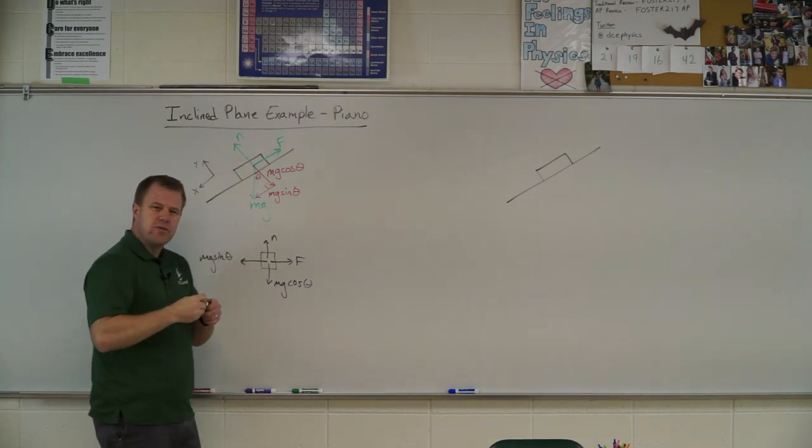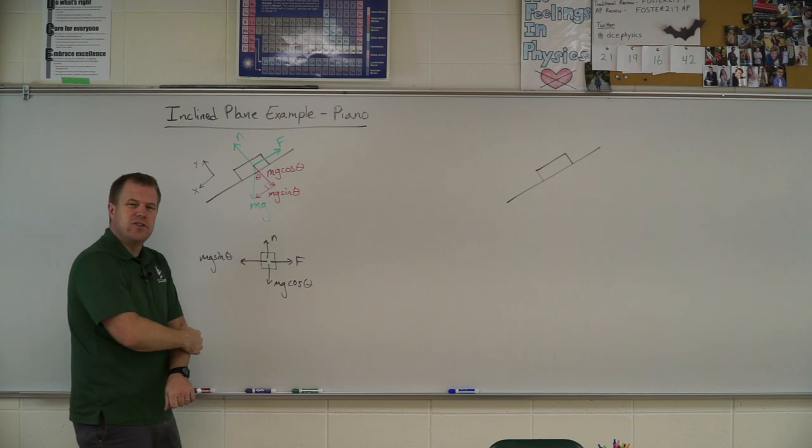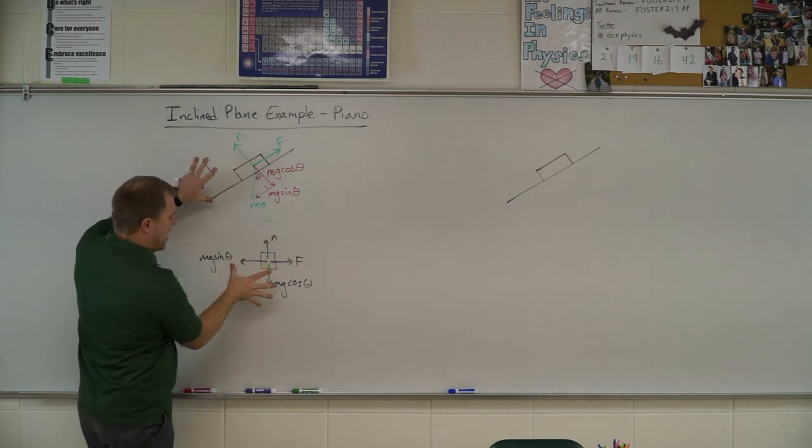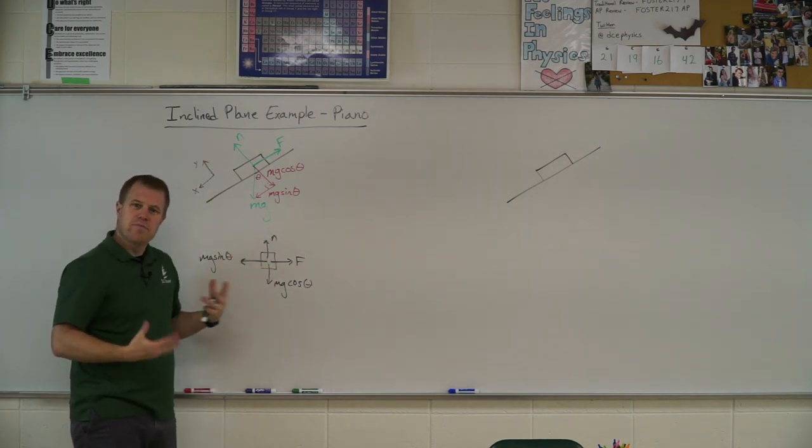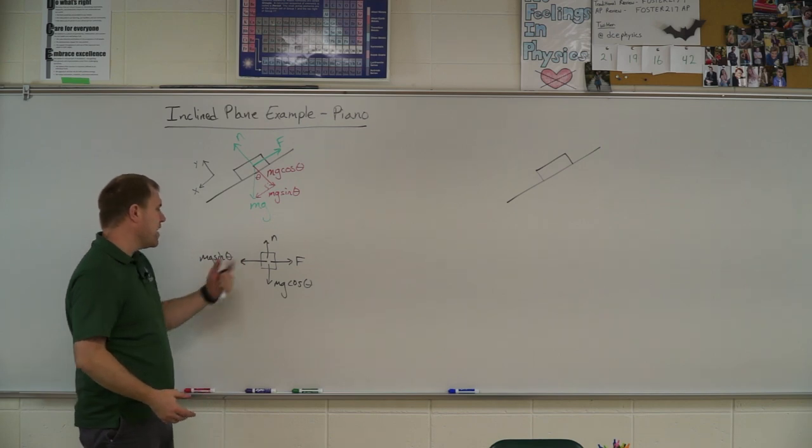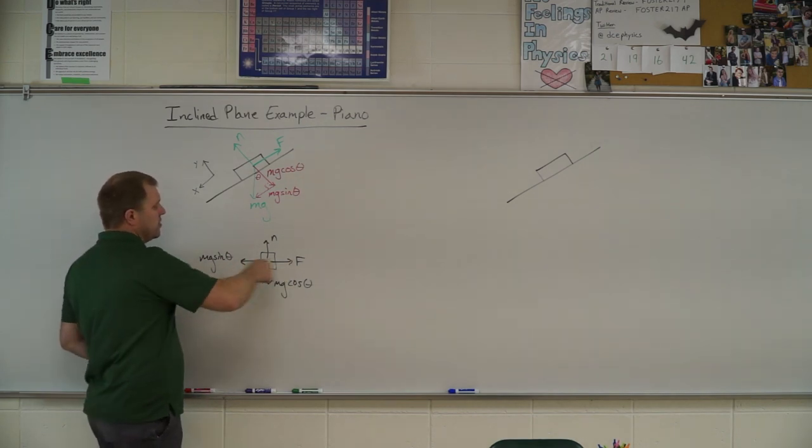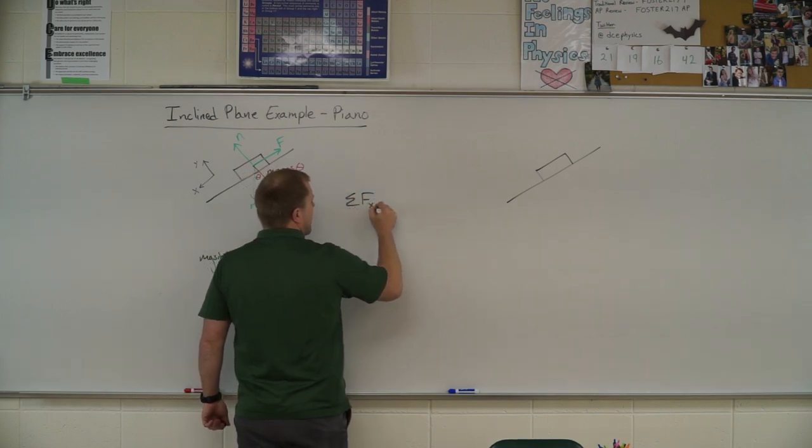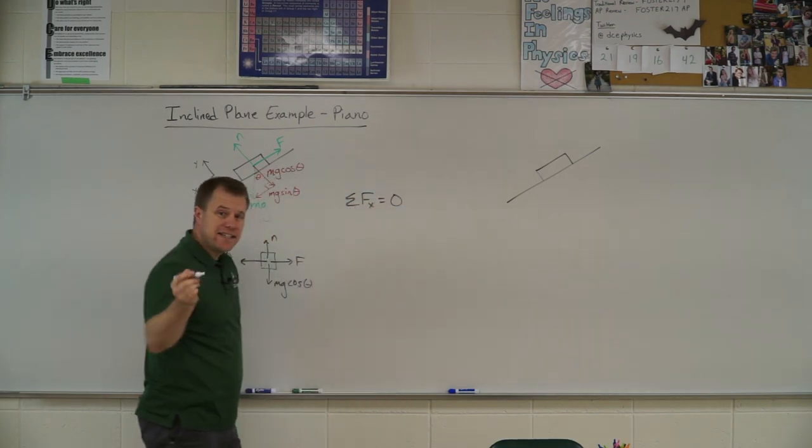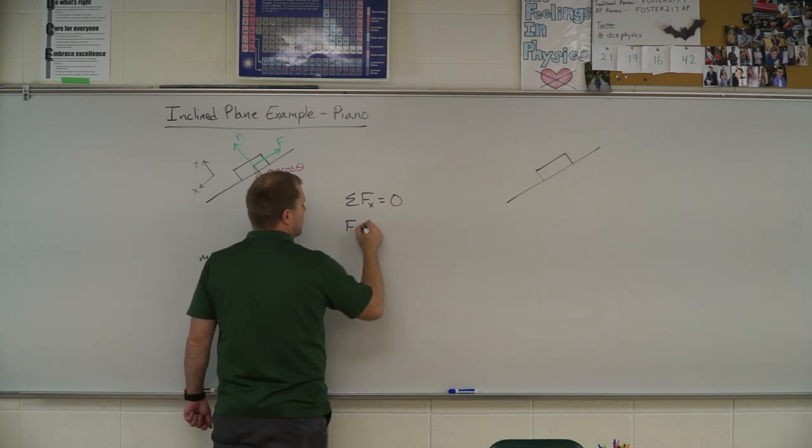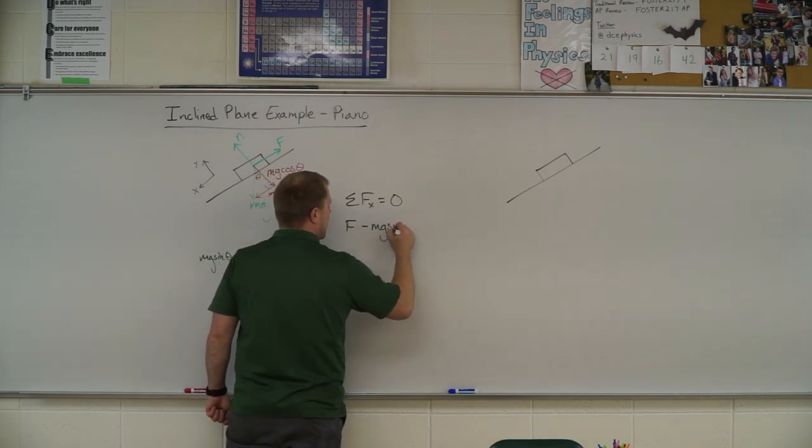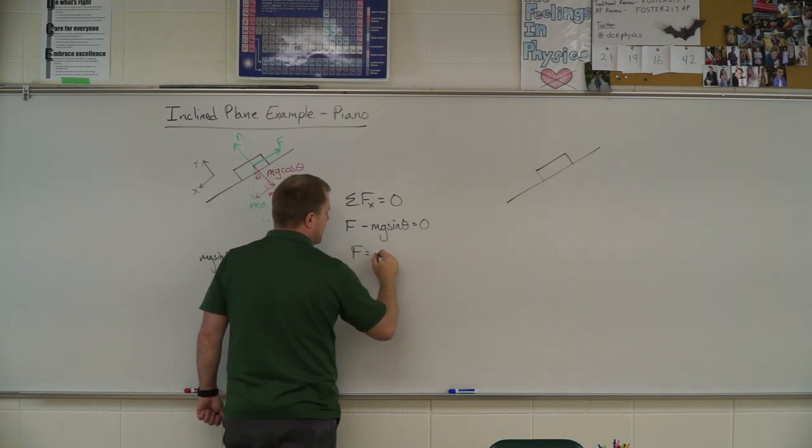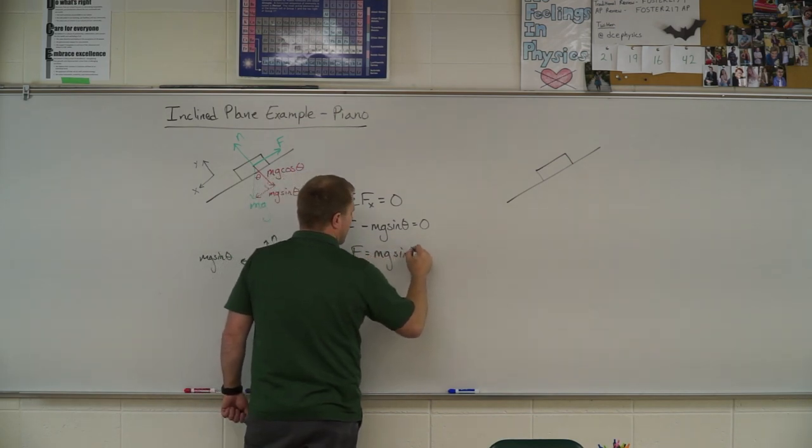So notice how when I redrew it, I kind of rotated it back to kind of orientate my xy axis with more familiar look. And so that's kind of nice. So what I need to look at is the x direction here. So I'm going to sum up the forces in the x direction. It's going to be zero because, again, it's at that constant velocity.